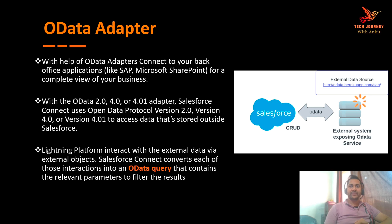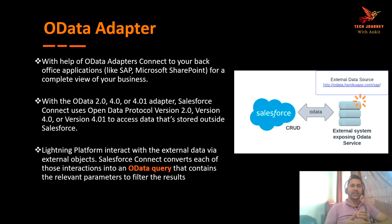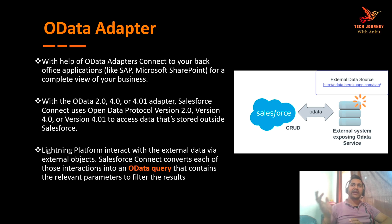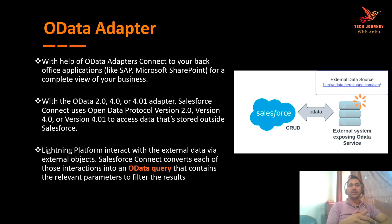The Lightning platform interacts with the external data via the external object. Whenever we are using Salesforce Connect or making any data virtualization, we always interact with the external data with the help of external objects. Salesforce Connect will convert each of those interactions into an OData query. Whenever Salesforce sends any instruction to the OData service, the language used to communicate is referred to as the OData query. Salesforce will send all the relevant parameters to filter the result — for example, fetching order details from the SAP system onto Salesforce — and it does so instantly.